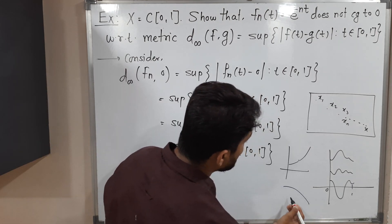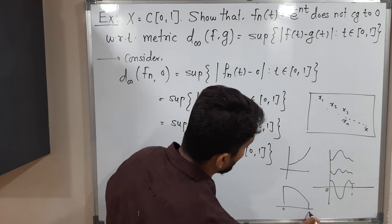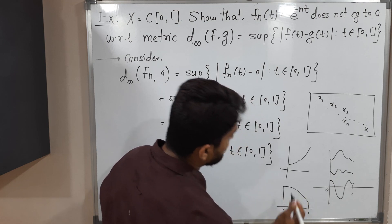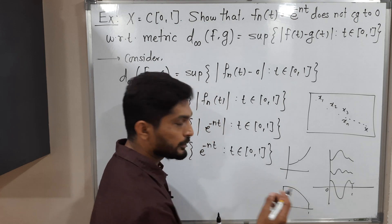If the function is decreasing, then it achieves its maximum value at the first point. Since it is defined on [0, 1] and is a decreasing function, it achieves its maximum value at the first point.